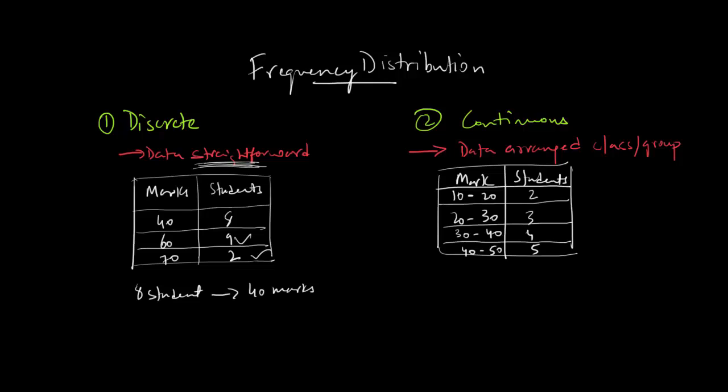Now, the interpretation is totally different. Two students have got marks between 10 to 20. It can be anything between 10 to 20—inclusive of 10 and 20, or any number in between. There's a whole set of numbers that can be the marks of two students. I hope you're getting the difference between these two.